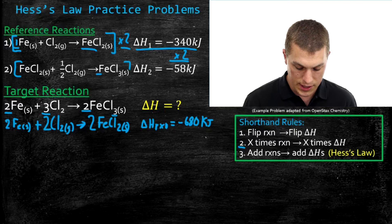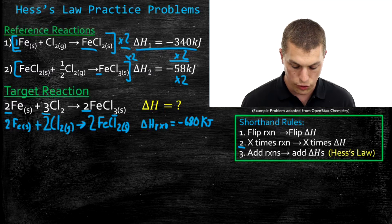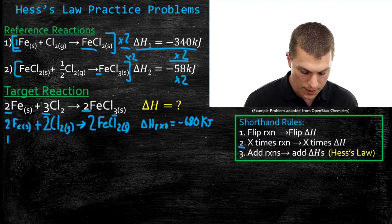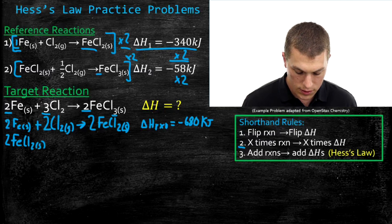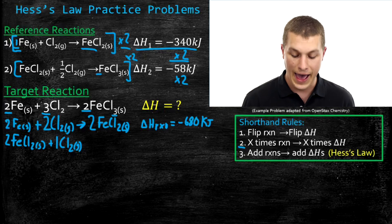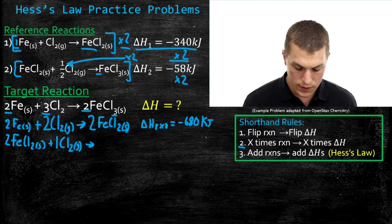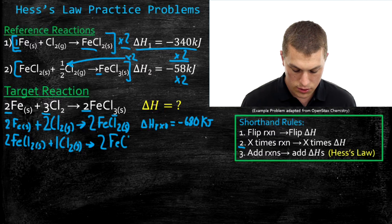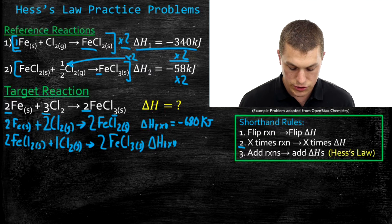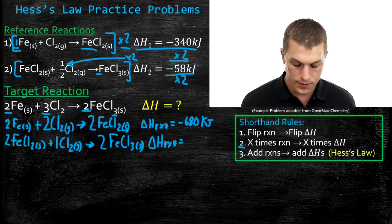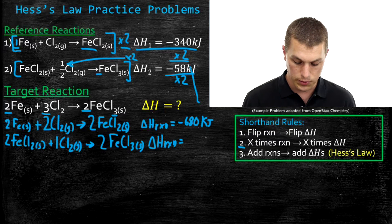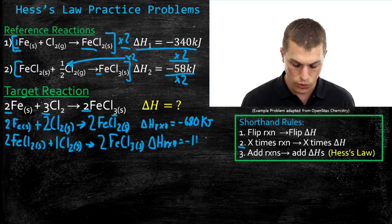I'm going to multiply reaction two by two, which means I'll also multiply the enthalpy by two. When I do that, I get two FeCl2 solid plus one chlorine — because two times one-half gives me one — and that goes to two iron three chlorides. The delta H for that reaction is two times negative 58, which gives me negative 116 kilojoules.